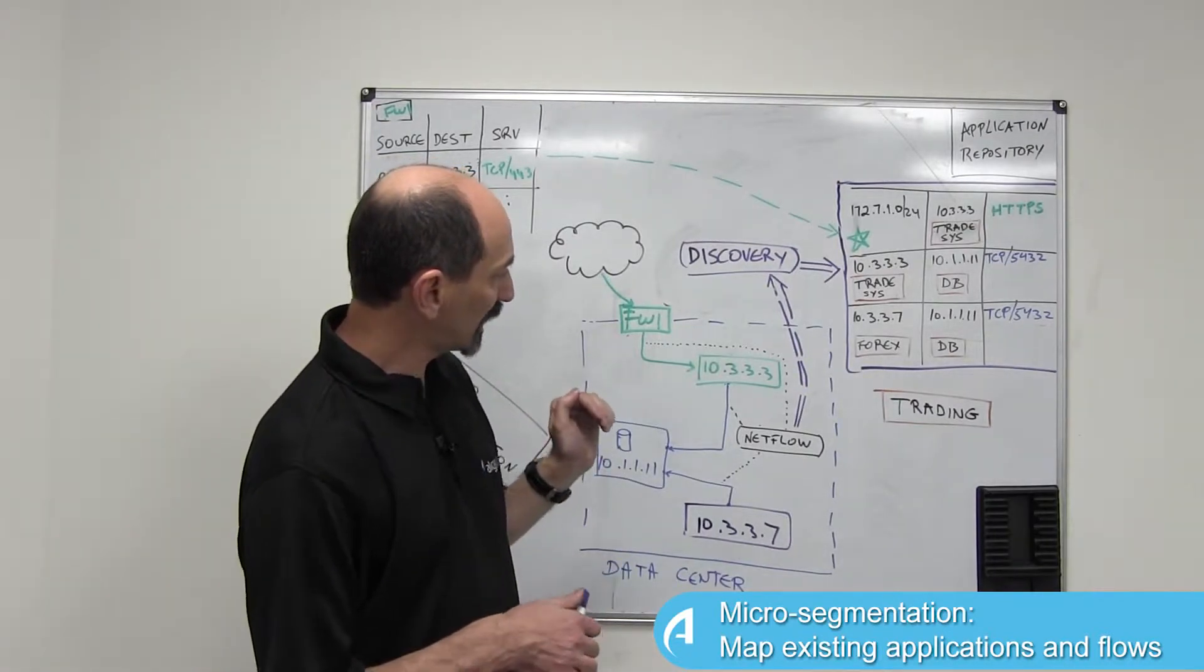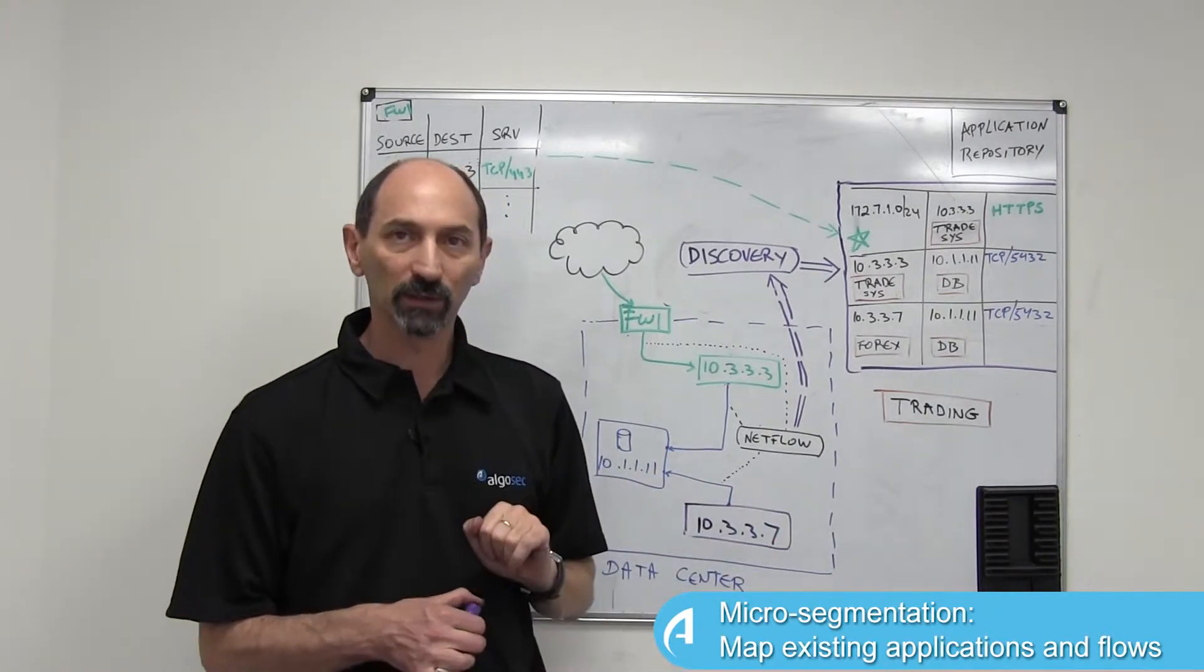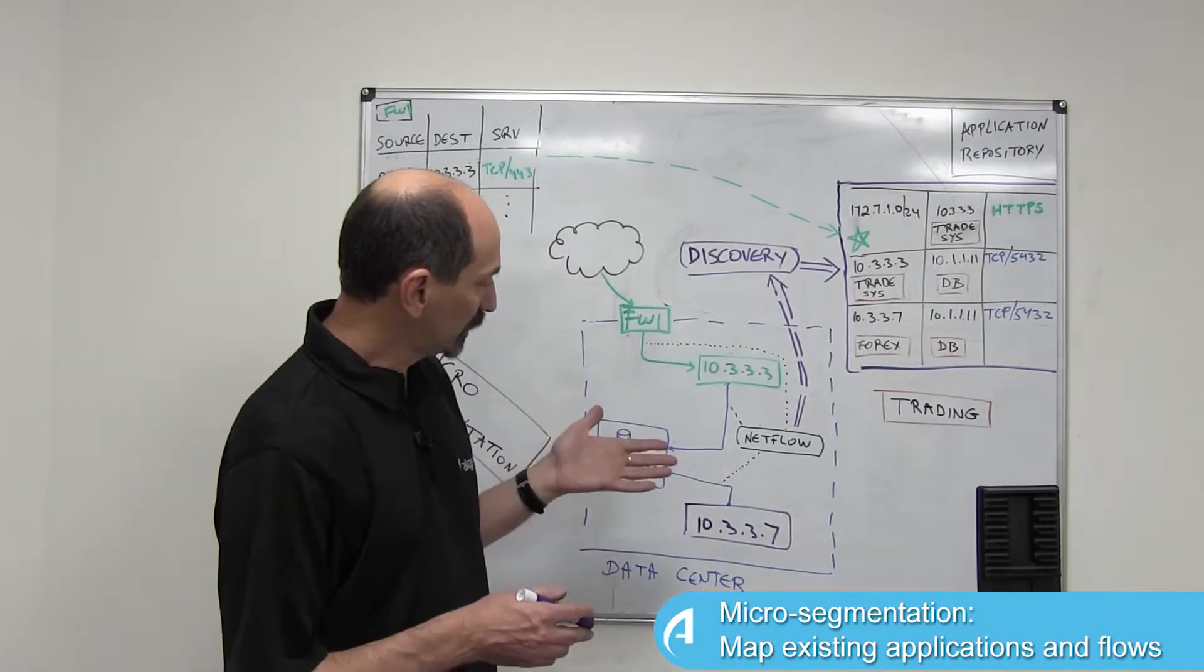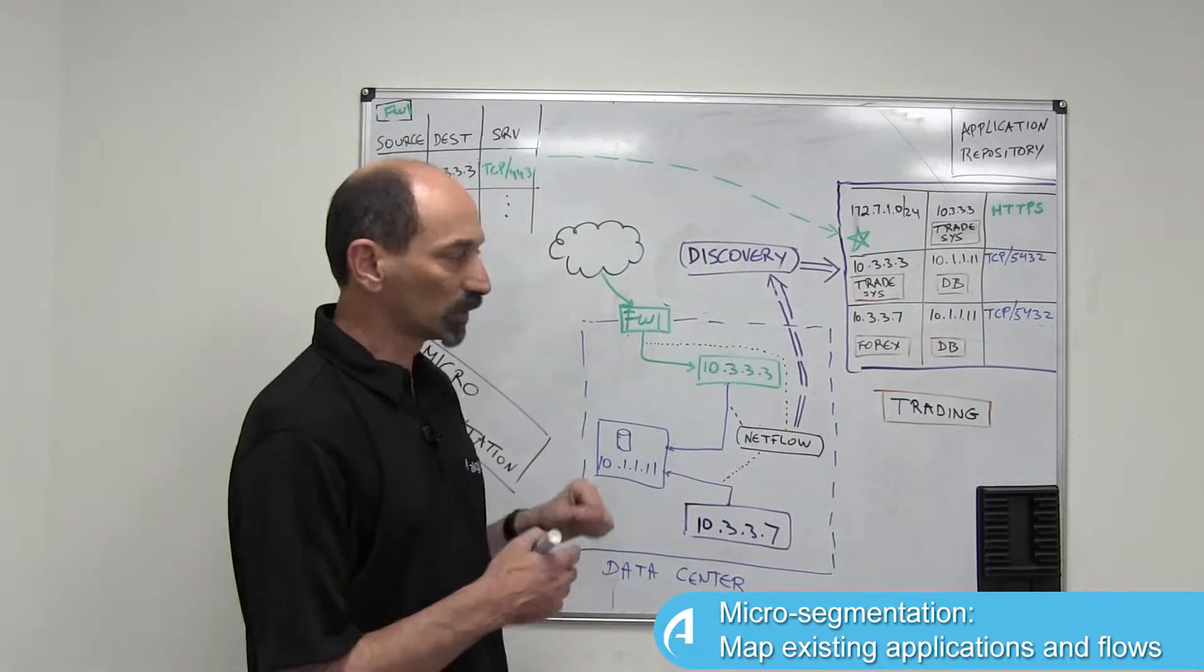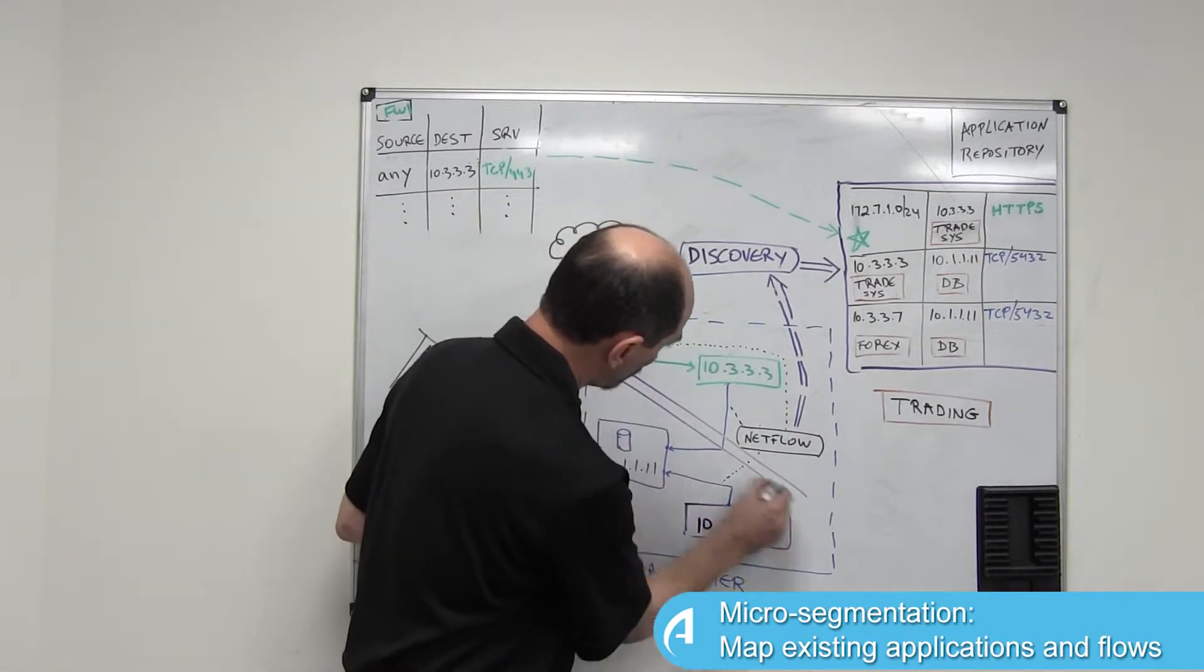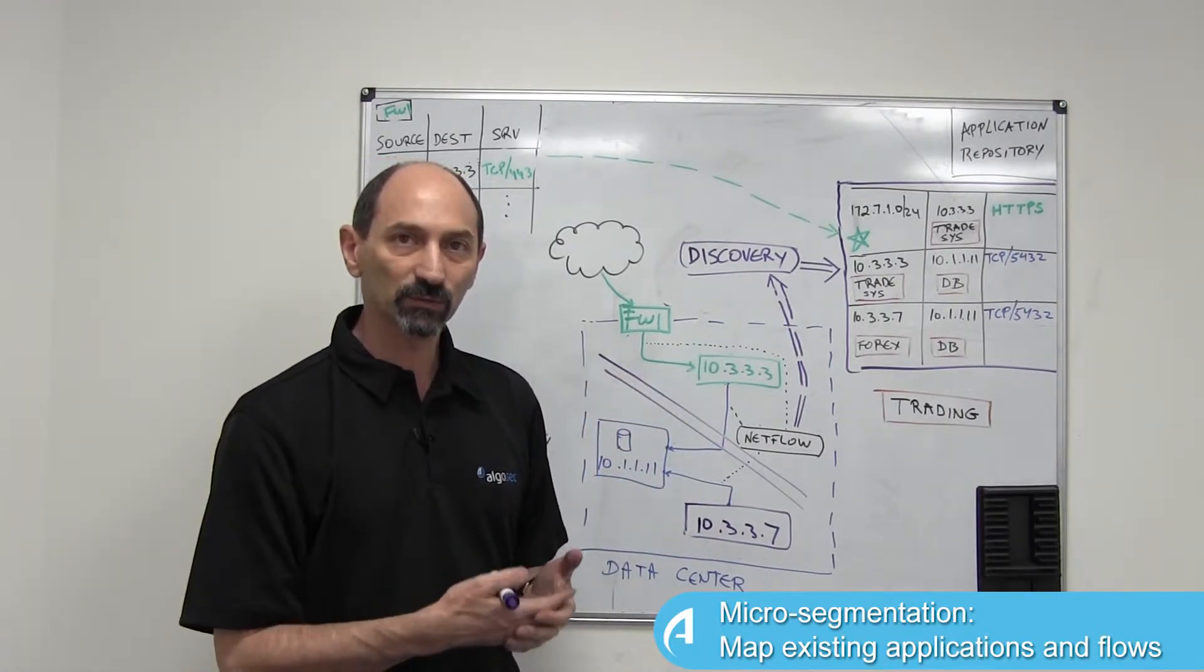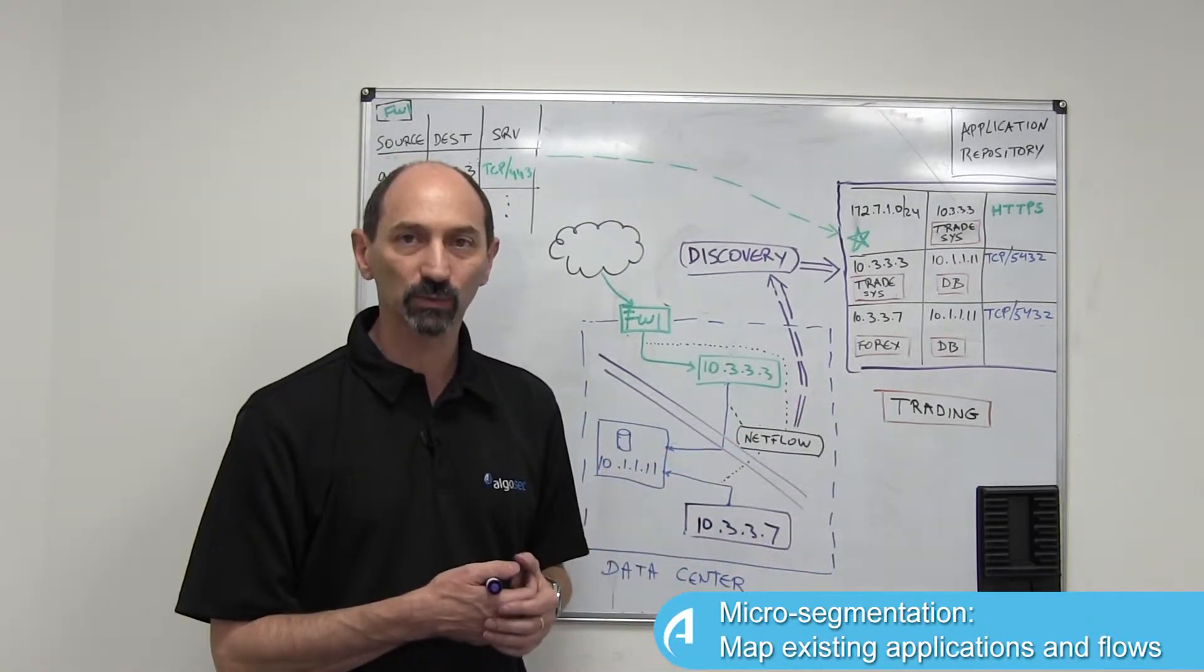Now you want to decide how to micro segment. You want to put another filter here so that some of these components are separated from the others and you need to find out what that is going to do in terms of filtering. If you introduce a new filter along this line then all of a sudden some of the flows that cross this boundary need to have explicit rules inside the new network filter to allow the traffic, otherwise the trading application will fail.